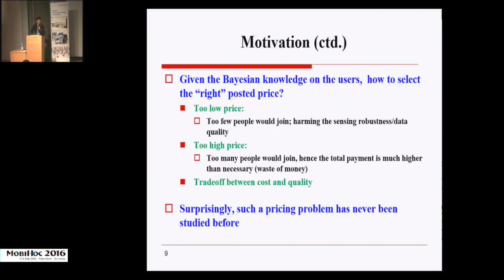When posted pricing is adopted, a fundamental problem is how to set the posted price. Given the Bayesian knowledge of the users, if the price is set too low, there would not be enough people to participate in the crowdsensing, and hence the sensing robustness and data quality would be very low. On the other hand, if we set the price too high, then the cost would be too much. Therefore, we are facing a trade-off between cost and quality when setting the posted price.